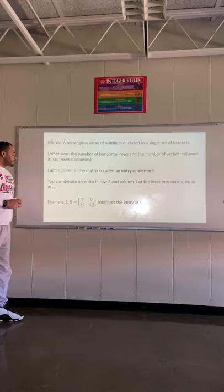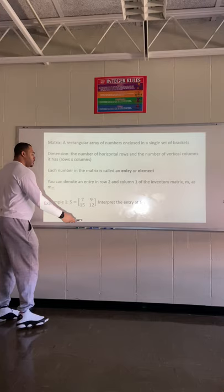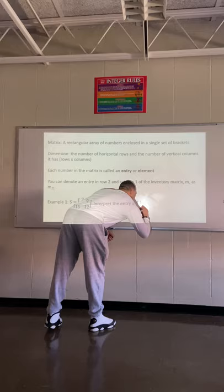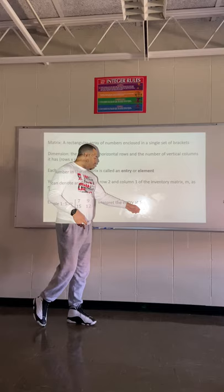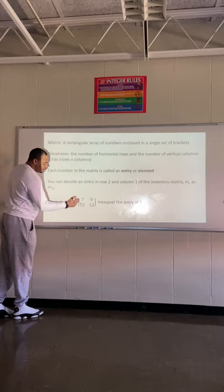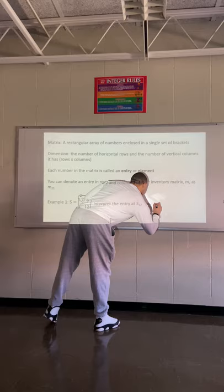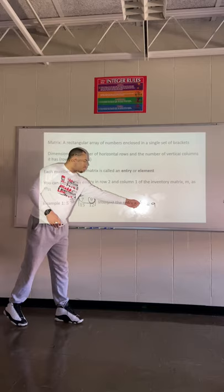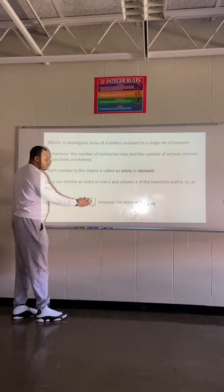This matrix is labeled as matrix S, and they want us to find S₁₂. If you can understand rows and columns, you can find S₁₂. The first number always represents the row, and the second number always represents the column. So this is asking us: where is the entry at first row, second column? Our first row is here at the top, and our second column is here — so first row, second column is this entry, which is equal to 9.